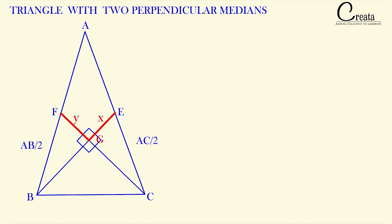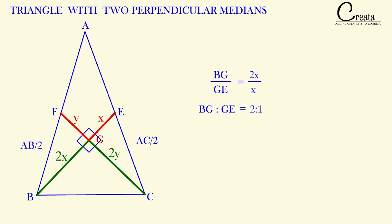We also know the centroid divides the median in the ratio 2:1. So if FG is Y, then CG is 2Y, and BG is 2X. The ratio BG:GE is 2X:X = 2:1, and the ratio CG:GF is 2Y:Y = 2:1, confirming the centroid property.